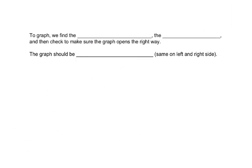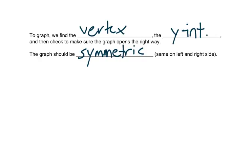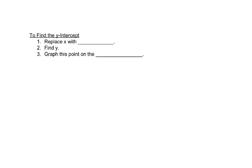To graph, we find the vertex, the y-intercept, and then we want to make sure that the graph opens in the right direction. The graph should be symmetric, meaning it's the same on the left and the right side. To find the y-intercept, we replace x with 0, we find y, and then we graph this point on the y-axis, because it's a y-intercept.